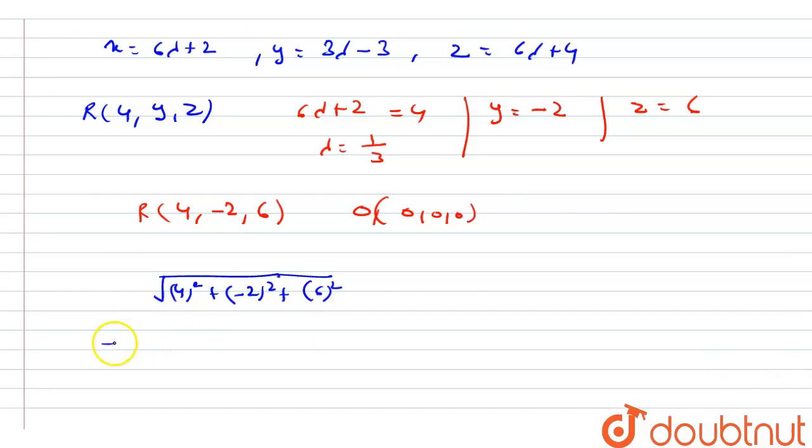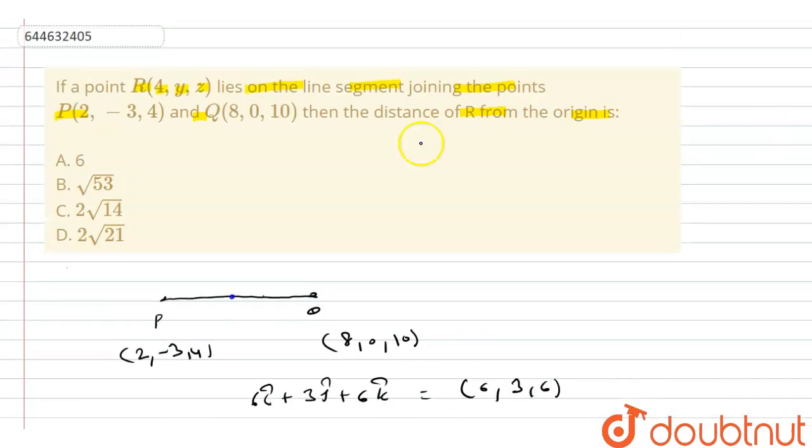If we simplify this, we get square root of 16 + 4 + 36, which equals square root of 56, or we can write this as 2√14. This is the required answer, and if we check the options, option C is correct.